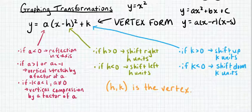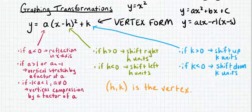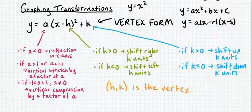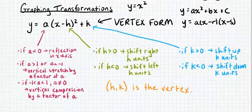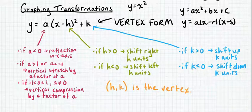The h value tells us where the graph is shifting left or right, starting from y equals x squared. If h is greater than 0, we shift to the right h units. If h is less than 0, we shift to the left h units. We have to keep in mind that the general form is x minus h, so we're not including that minus sign — it's just whatever the value of h is. So if this was x minus 3, then h is 3 and we shift to the right three units. If it was written as x plus 3 in the brackets, we'd rewrite that as x minus negative 3, in which case h is negative and we shift to the left.